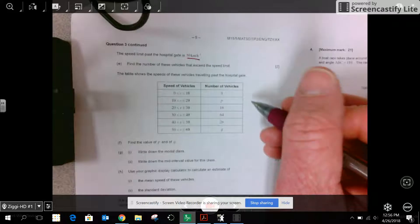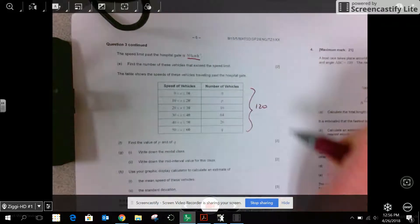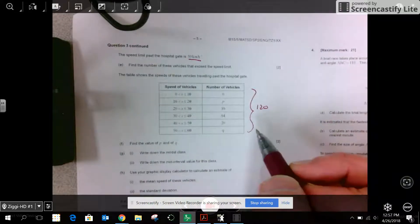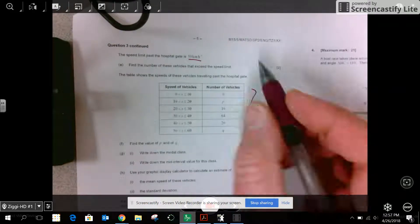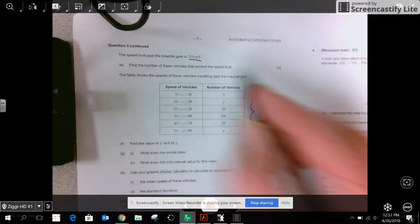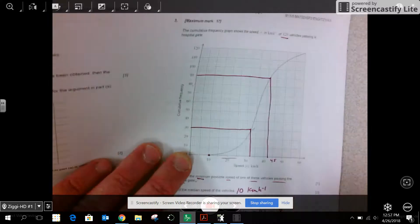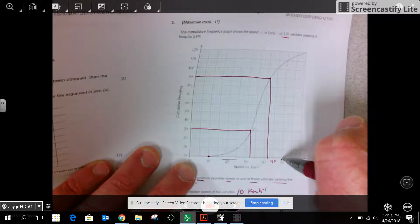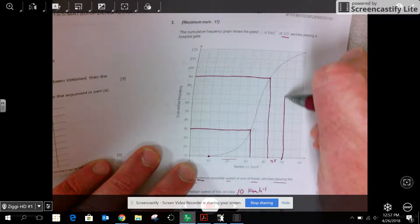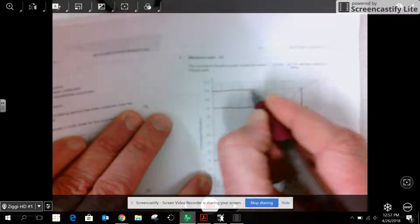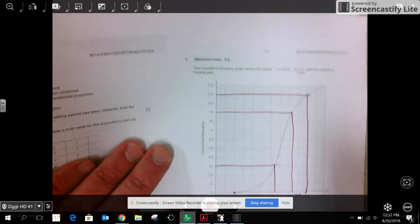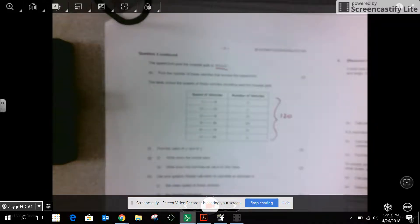So we know there's 120 vehicles from the other page. And it says we've got to find P and we've got to find Q. Estimate the number that exceed the speed limit. I can go back to my graph and I know the speed limit is 50. So if I go up to 50 and over, that means 110 went 50 or less. So there are 10 vehicles that exceeded the speed limit.